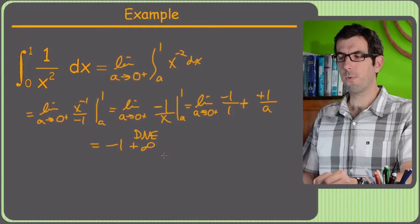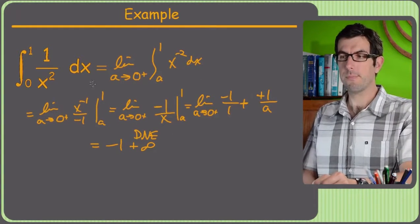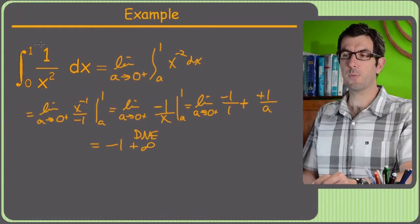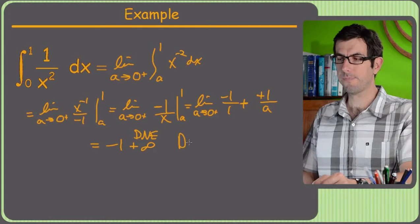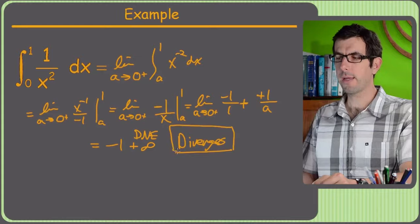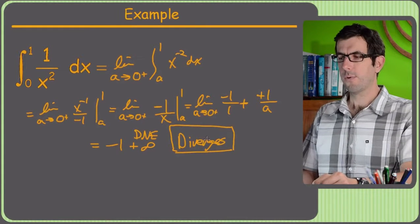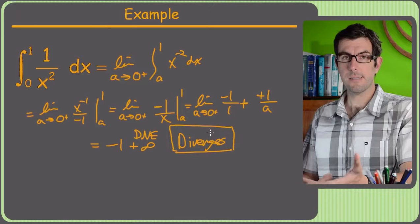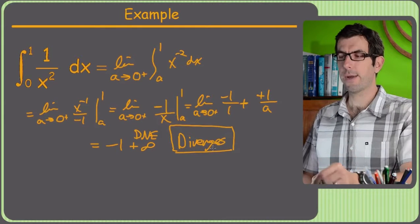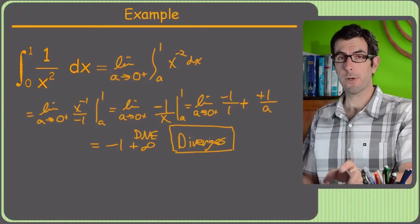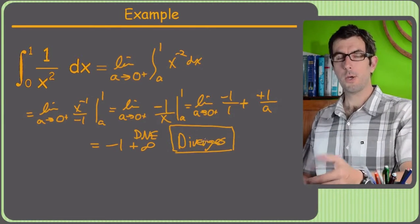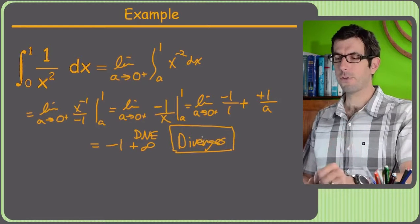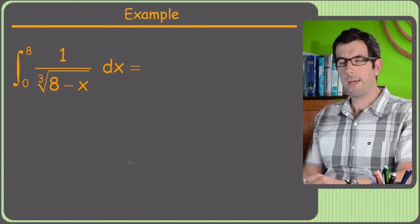Therefore, this problem — the area between zero and one — diverges. They're not really saying the area is infinite, nor that the area doesn't exist — it's just that the area diverges. Just like in the other improper integral problems, when the limit doesn't exist, it's diverging.